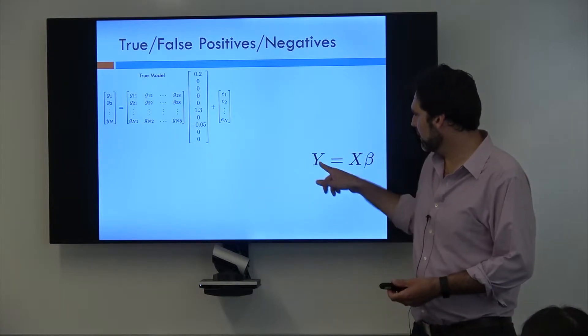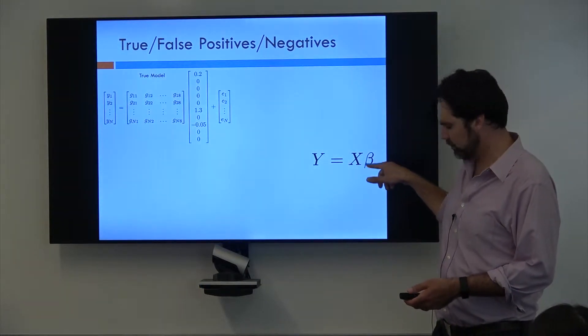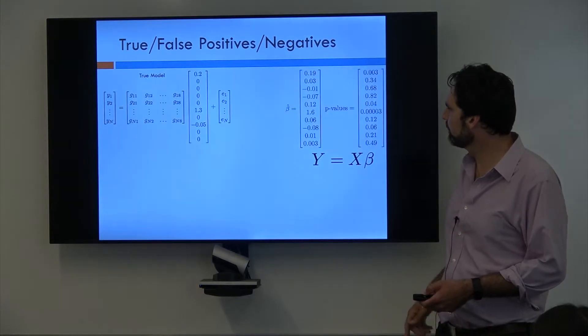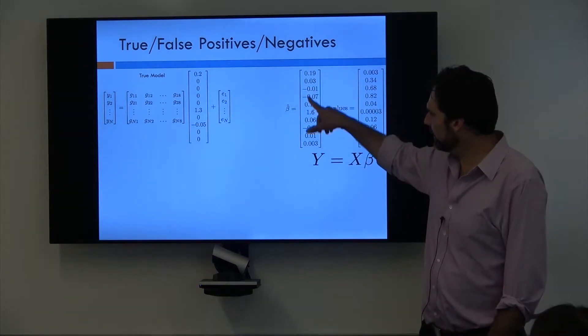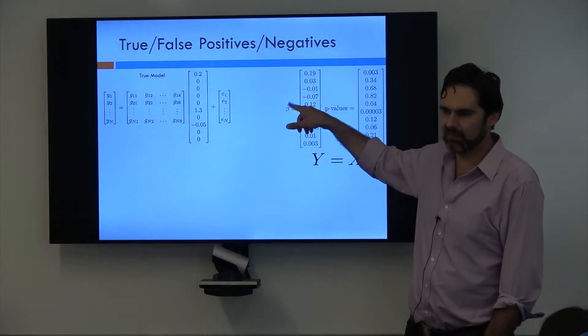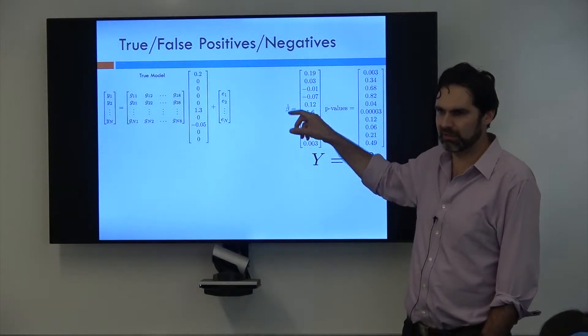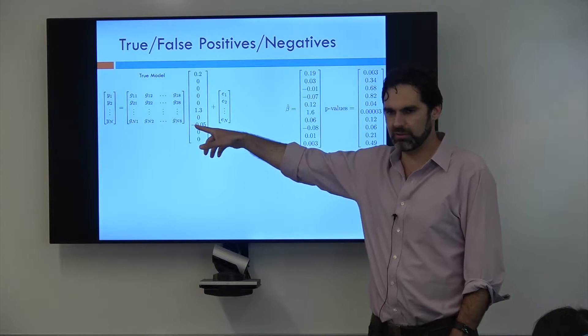Now, if I want to fit this model, I want to estimate what these betas are. Possibly I'll get something like this. I'll now get this vector of beta hats. The hat represents that this isn't the true value, but it's rather an estimate of what the true value is.